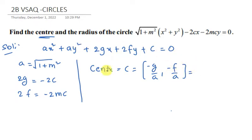Substituting our values, the center equals (c divided by square root of 1 plus m squared, comma, minus mc divided by square root of 1 plus m squared).